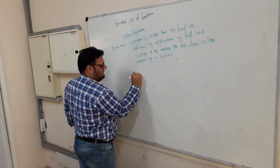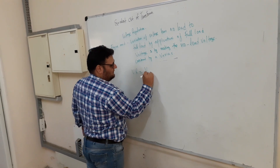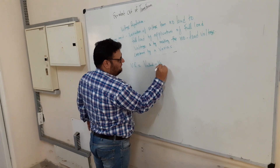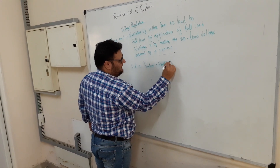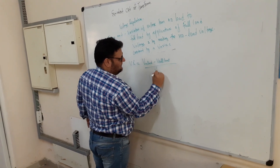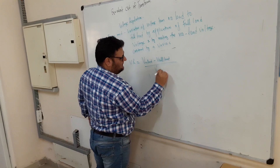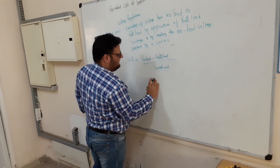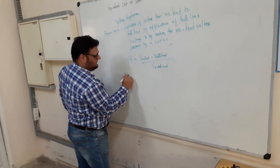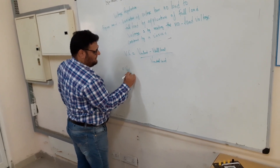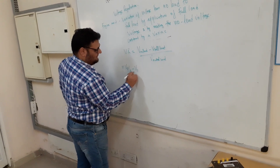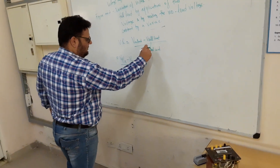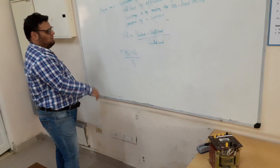Voltage regulation is defined as: (V no load − V full load) / V rated. This can also be represented as (VP/A − VS) / VS, where VP/A is the no-load voltage referred to the secondary, and VS is the full load voltage.